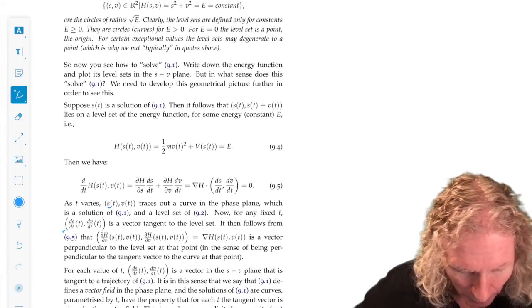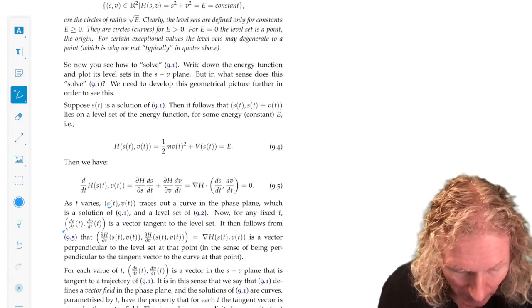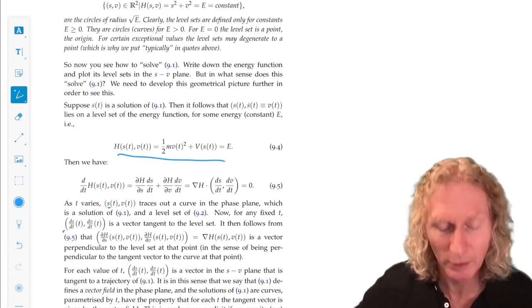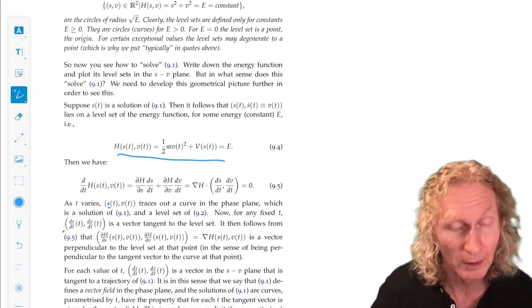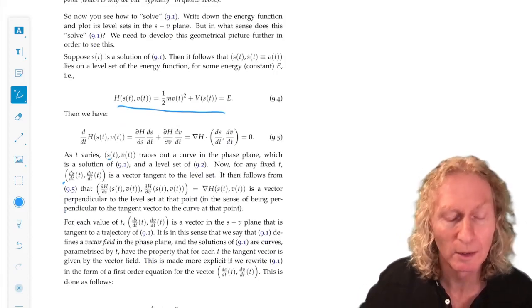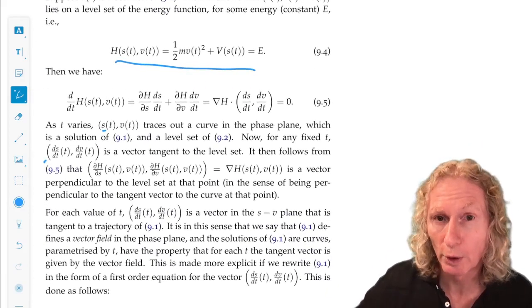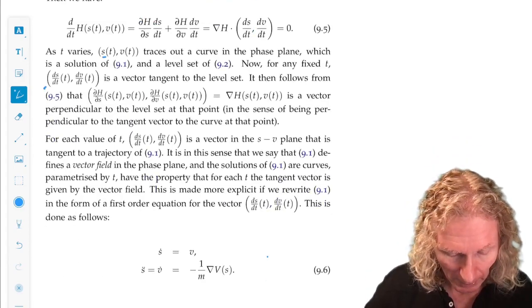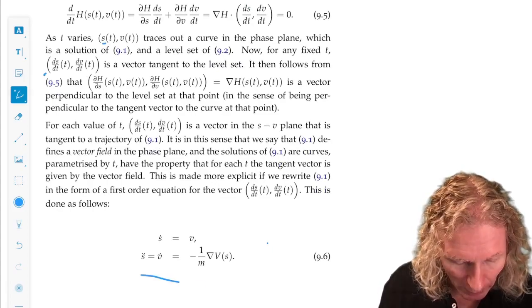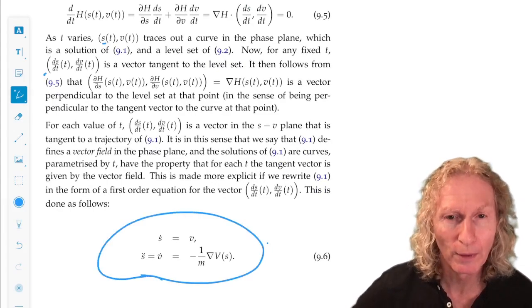So if a trajectory is s of t, v of t, it is constant on this energy function, constant in time. And s dot, ds dt, dv dt is the tangent vector to the curve, to the level curve. And we reflect this by writing Newton's equation in a first order vector form on the phase plane.